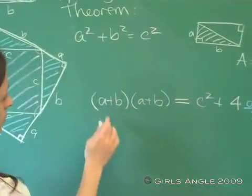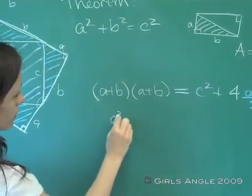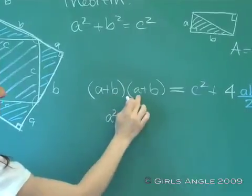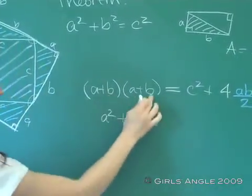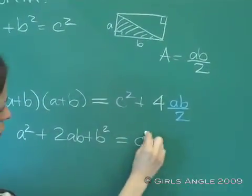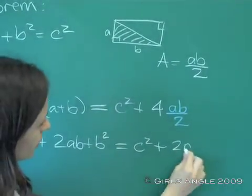Great. So what do we do now? Well, we just have to multiply. We have a times a, which is a squared, plus a times b, plus b times a, which is just 2ab, plus b times b, which is b squared. That equals c squared plus 4ab over two is just 2ab.